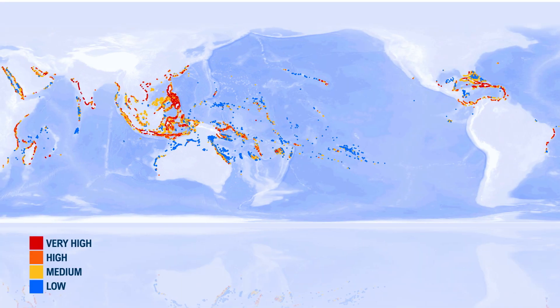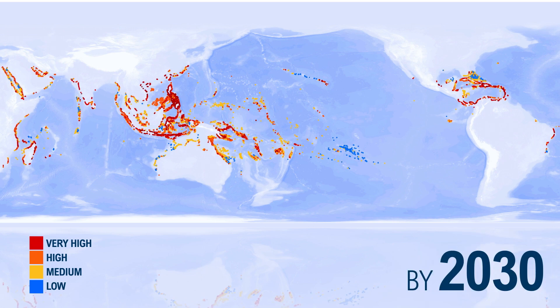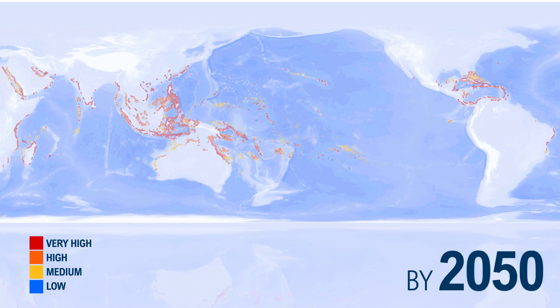Unless we can slow climate change and reduce overfishing and pollution, by 2030, 90% of coral reefs will be threatened. By 2050, virtually all reefs will be threatened.